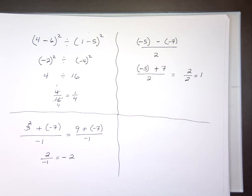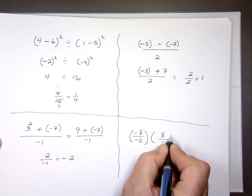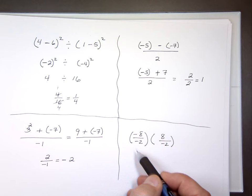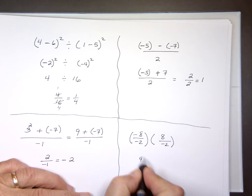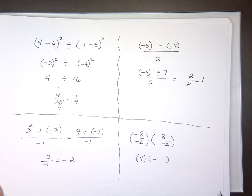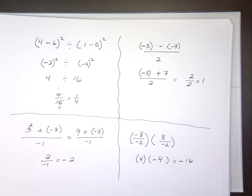One more with fractions. What's negative 8 divided by negative 2? Positive or negative? Positive. 8 over 2 is 4. Now the second part: positive divided by a negative is negative. 8 divided by 2 is 4, so that's negative 4. Now you multiply those results: different signs give you a negative answer — negative 16.